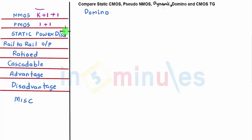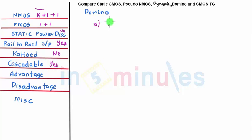Static power dissipation for domino is the same as dynamic. Rail-to-rail output: yes, you get a perfect output. You don't need to size it. Can you cascade a domino with another domino? Absolutely yes — only pure dynamic circuit families are not to be cascaded.